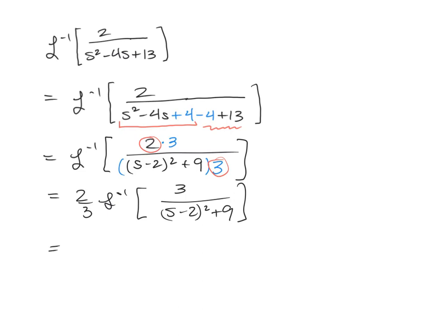So we're going to have a 2 thirds. We're going to have an e to the 2 times t because, again, c is equal to 2 here. And then we're going to multiply that by the sine of 3 times t. And that right there will be the inverse of our original transformation.